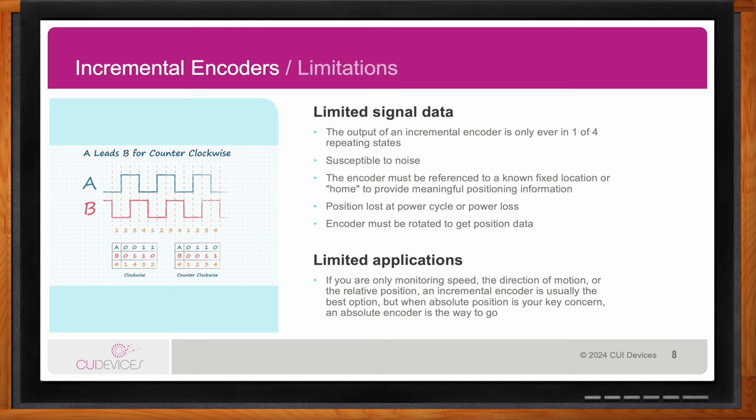In some systems, a little bit of motion to find position is fine. But in applications where any motion could cause damage or something to go awry, it's critical to know where you are at startup without rotating. An incremental encoder is great for monitoring speed, direction of motion, and relative position — it's simple, easy to use, and great technology. However, if you need to know your position at startup or after a power loss, an absolute encoder is a better choice in many applications.